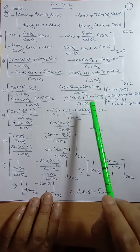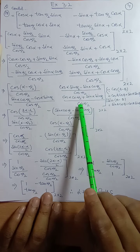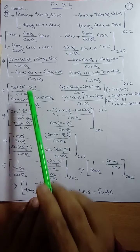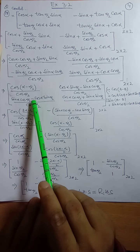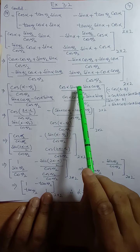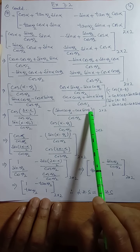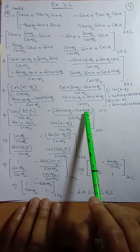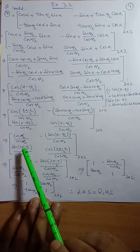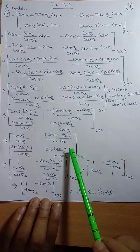This evaluates to: cos(alpha/2 plus sin(alpha/2) times sin(alpha/2)), and for the case alpha minus alpha/2, taking LCM we get 2 alpha minus alpha over 2, which equals alpha/2. For the sin(A minus B) case, alpha minus alpha/2 also reduces to alpha/2. So the result simplifies accordingly, showing LHS equals RHS and the proof is complete.